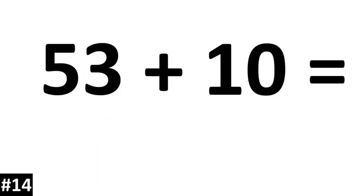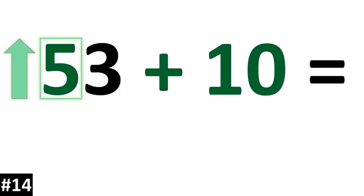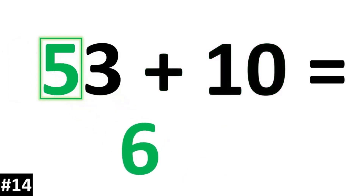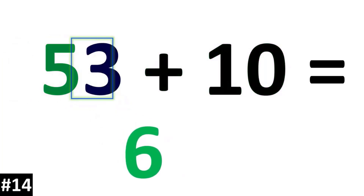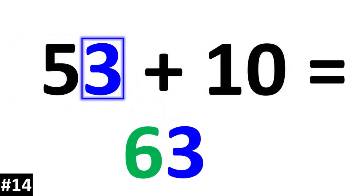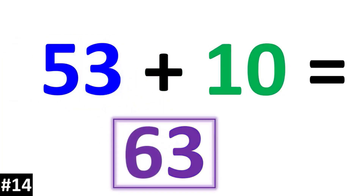How about 53 plus 10? The 5 is going to go up by 1 and become a 6. And the ones digit stays the same. 53 plus 10 is 63.